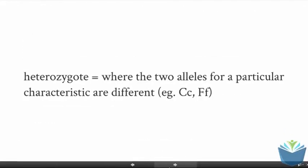A heterozygote, that's where the two alleles for a particular characteristic are different, so big C, small C or big F, small F.